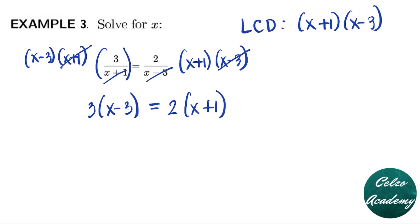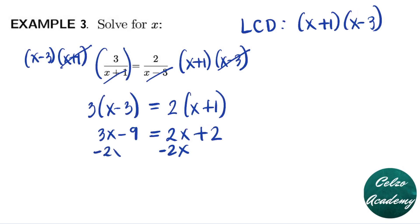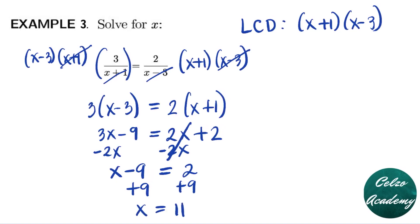You can also use a shortcut here: cross multiply 3 and (x-3), and also 2 times (x+1). Using the distributive property: 3x - 9 = 2x + 2. Subtracting 2x from both sides gives x - 9 = 2. Adding 9 to both sides gives x = 11.